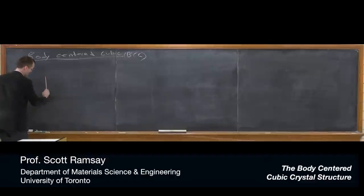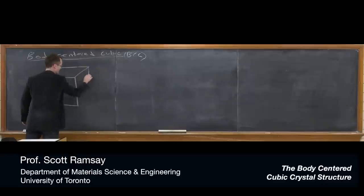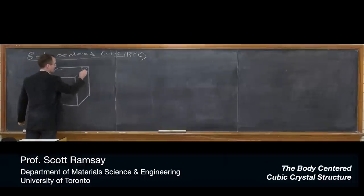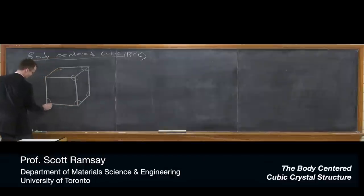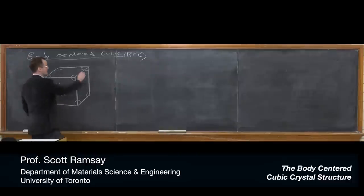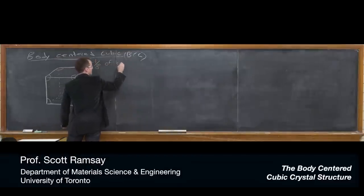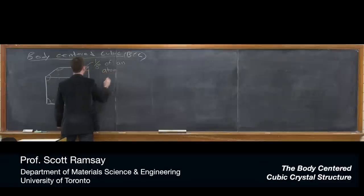As we do for FCC, we can start with a cubic unit cell and position some atoms in that unit cell. We're going to position atoms at each of the corners, and this time I'm drawing them as the fraction of the atom that's inside the unit cell. I'll dot in the back of the unit cell here, so you can see there's an atom at the back bottom left corner. This is, as we have for FCC, one-eighth of an atom at each corner.